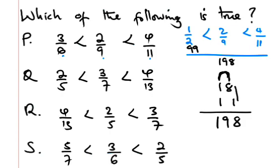For 2/9, the numerator becomes 44. For 4/11, 18 times 4 is 72. So we have 99 is not less than 44, so this one is false. No need to proceed with option P.